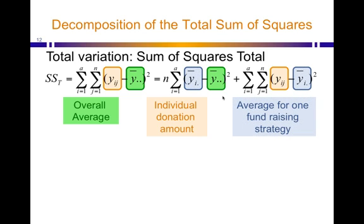And the only other term, it's highlighted in blue here, is the average for a single fundraising strategy. So the average for letter, the average for email, the average for receiving a phone call. For one of them, the first one on our data table, it was 1306, approximately what that average value was.